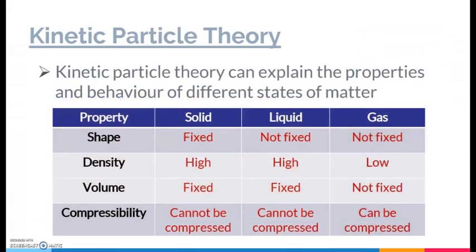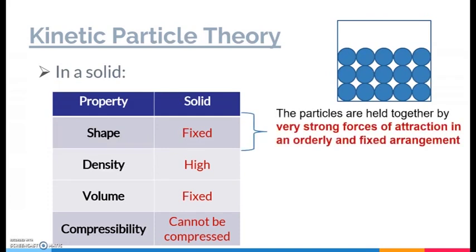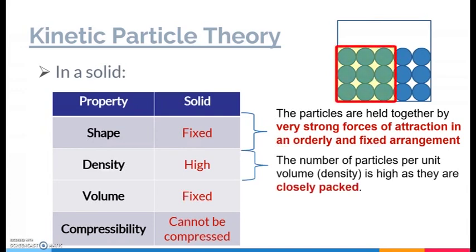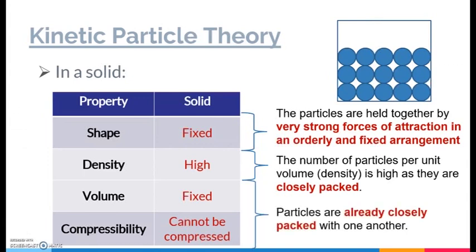How does knowing the SAM — spacing, arrangement, and movement of the particles — help us understand the properties mentioned earlier? For a solid, it has a fixed shape because the particles are held together in an orderly and fixed arrangement, hence the shape of the solid always remains as it is. In terms of density, the density of a solid is higher compared to liquid or gas because the number of particles per unit volume is very high as the particles are very closely packed. In terms of volume and compressibility, the solid has a fixed volume and cannot be compressed because the particles are already very closely packed with one another, leaving not much spatial allowance for the particles to be further compressed together.